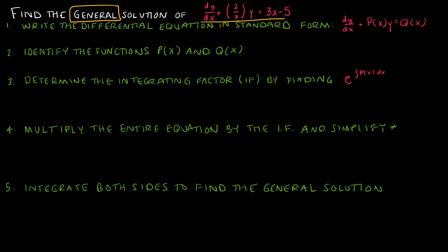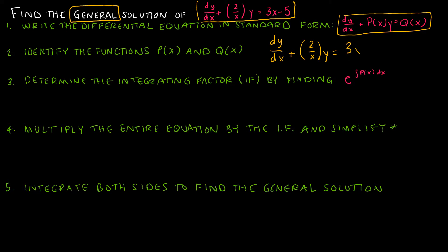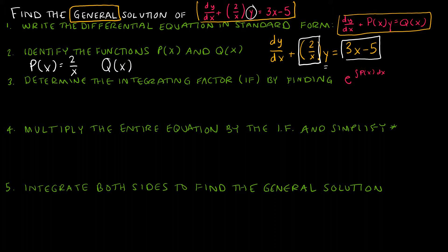Here is our differential equation. Step one says write it in standard form. As you can see, dy/dx plus 2/x times y equals 3x minus 5 is already in standard form. Step two: once you have it in standard form, you can easily identify p(x), which is equal to 2/x — that's what's being multiplied by y. And q(x) will be 3x minus 5.